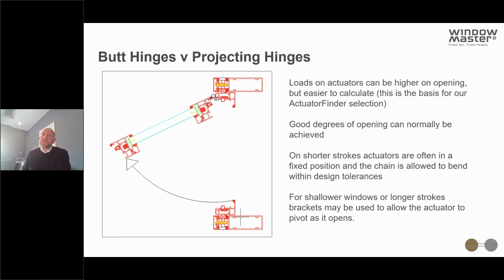Butt hinges versus projecting hinges: with butt hinges the loads on the actuators are easier to calculate. The forces required tend to be a bit higher but we know what they are, and that's the basis on which the actuator finder works. We can normally achieve good degrees of opening. On shorter stroke applications the actuators may be fixed and the chains are designed to bend with the arc of the window opening. On longer stroke applications we may use an actuator with a longer chain and a pivot bracket which allows the actuator to pivot and tilt as the window opens.